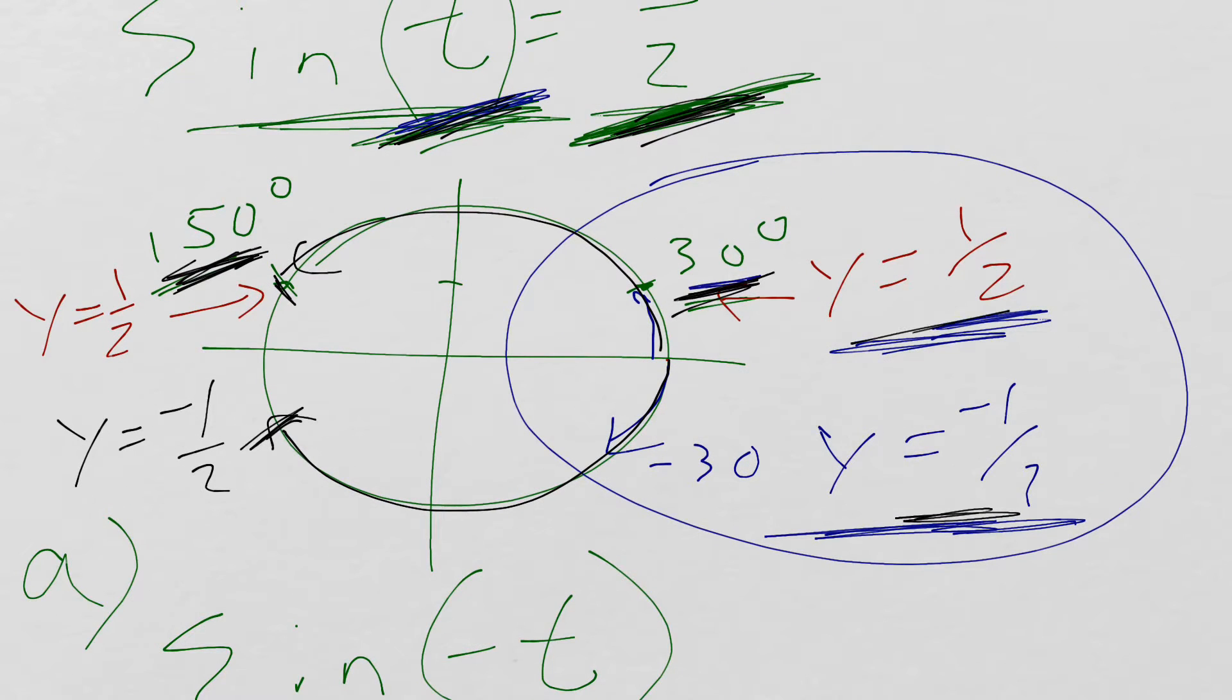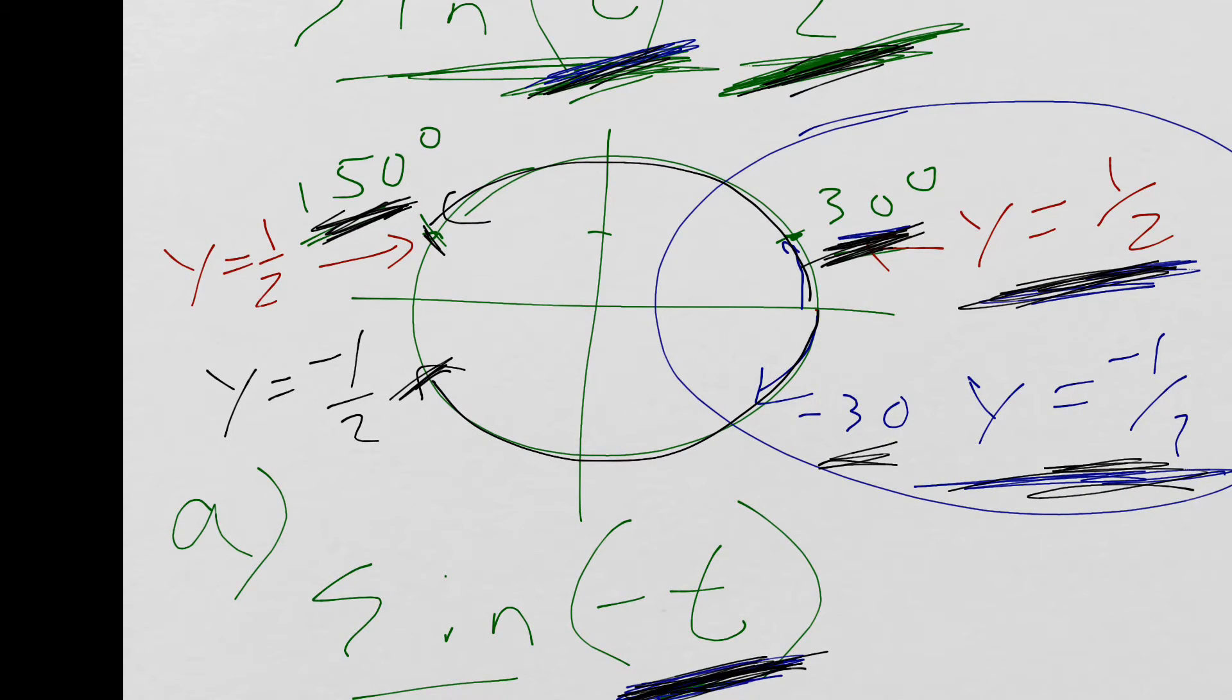Well, in both cases, if you change 30 to negative 30, you go from 1 half to negative 1 half. If our original angle was 150, change it to negative 150, which would be right here. Our value still would change to negative 1 half.